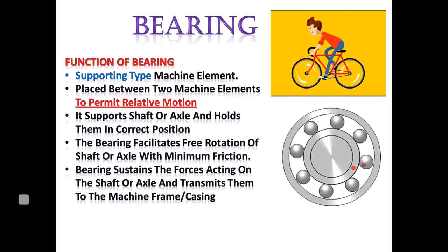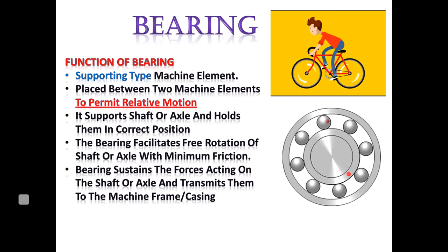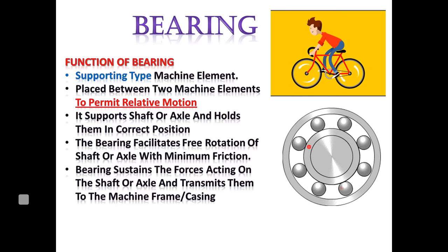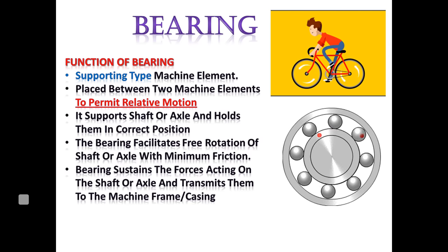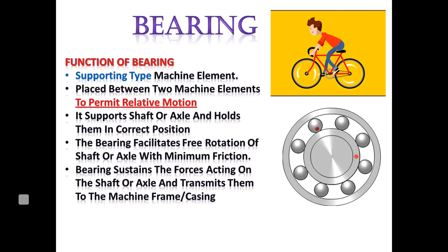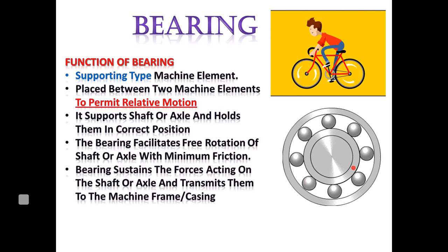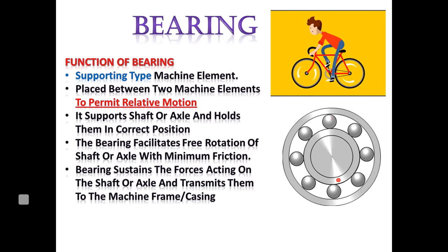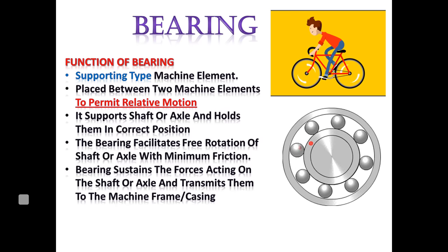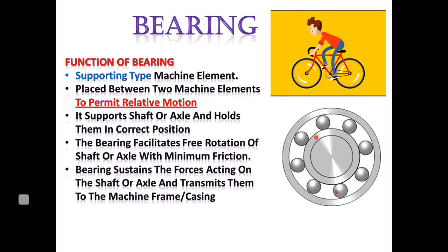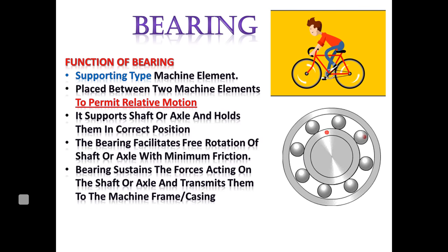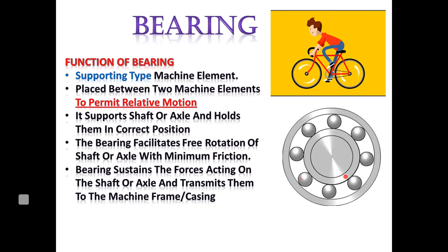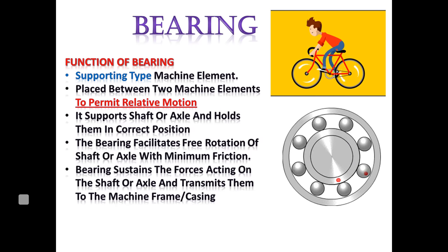As we had in previous lectures on types of machine elements, shaft and axle — bearing is a supporting type machine element which supports the shaft and axle and holds them in the correct position. Bearing allows the free rotation of the shaft and axle with minimum friction. Basically, bearing reduces the friction between moving parts and permits relative motions. For shaft and axle support, we use bearings.